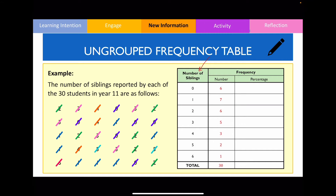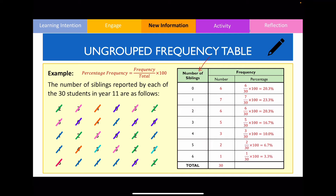To fill in the percentage frequency column, recall the formula: frequency divided by the total, then multiplied by 100. Doing this and rounding to one decimal place gives these values, and all percentage values should add up to 100%, which in this case they do.